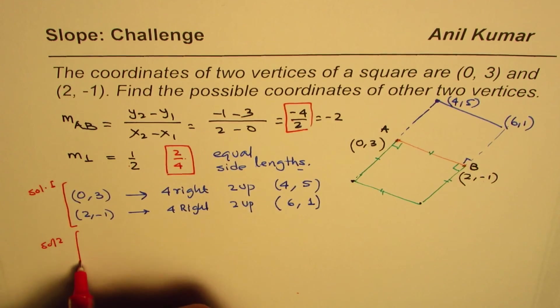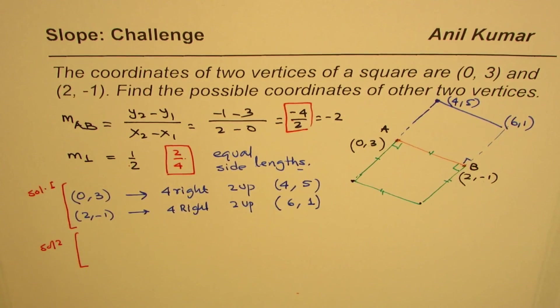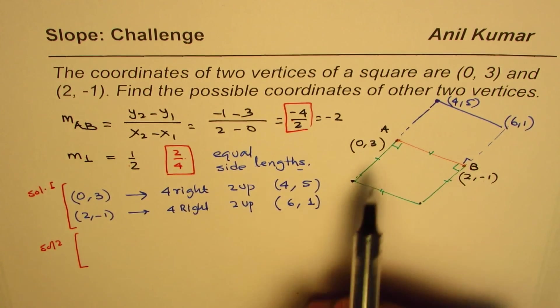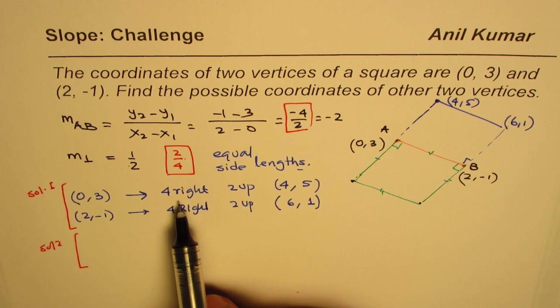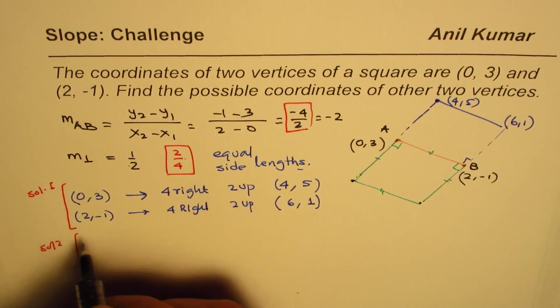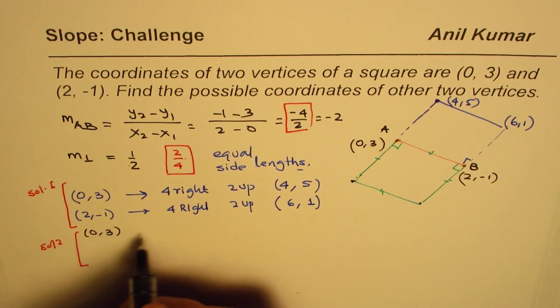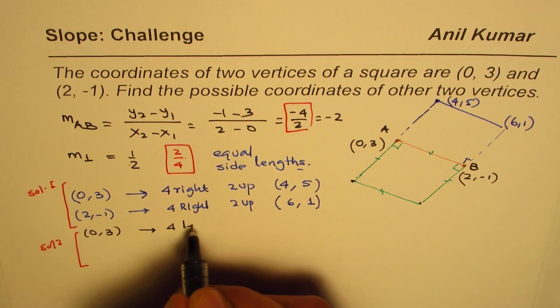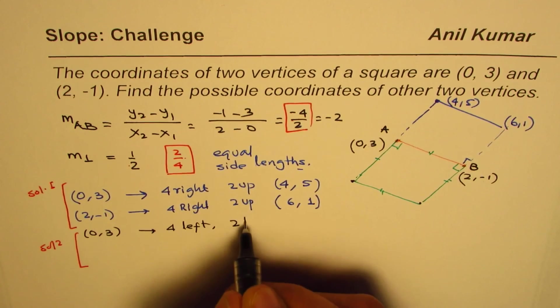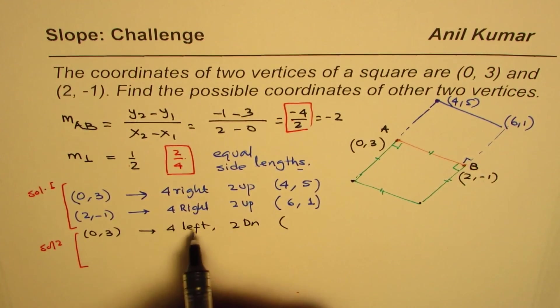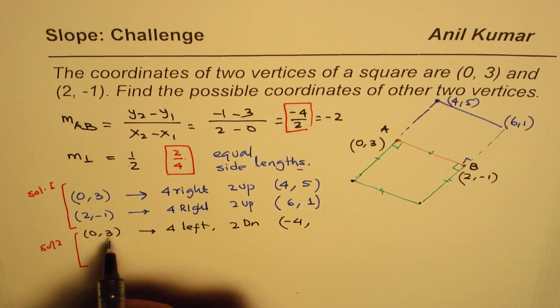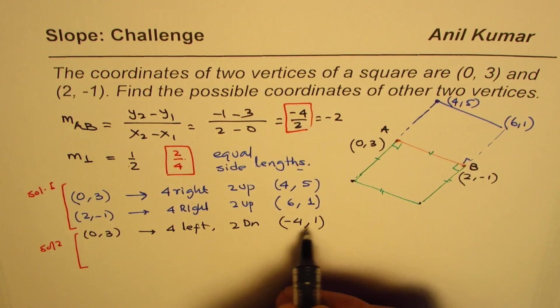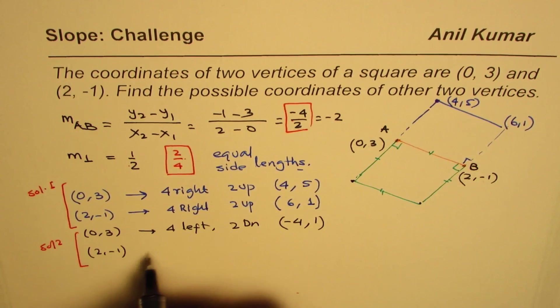Now let's find the second solution. Instead of moving right and up, we'll move left and down. From (0, 3), going 4 left and 2 down means subtracting 4 from x and 2 from y, giving us (-4, 1).